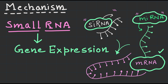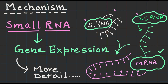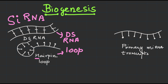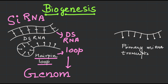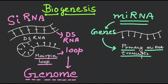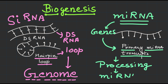Let's break down the molecular mechanism of RNA interference further. siRNAs are typically derived from exogenous double-stranded RNA molecules or endogenous hairpin loop structures within the genome. miRNAs are produced from endogenous genes, transcribed as primary miRNA transcripts, also known as pre-miRNAs, that undergo processing steps to generate mature miRNAs.